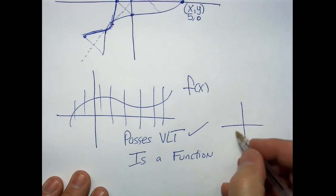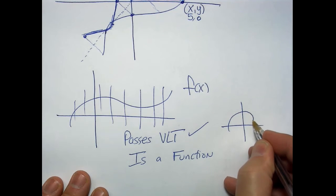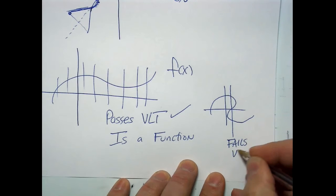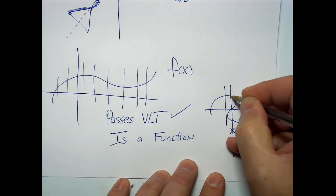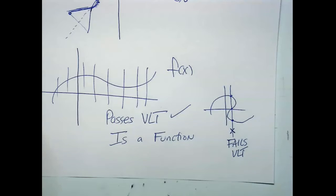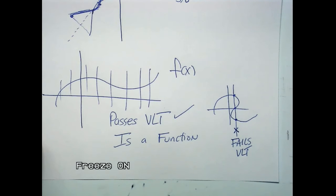Curves that curl back on themselves fail the vertical line test. The reason is that for a particular value of x there are actually three valid y-values, and functions don't work that way. Functions are only supposed to provide one y-value — for any given x, one y-value. That curve, for one x-value, is producing three different y-values. It can't make up its mind. Functions can only provide you with one y-value to be valid as a function.